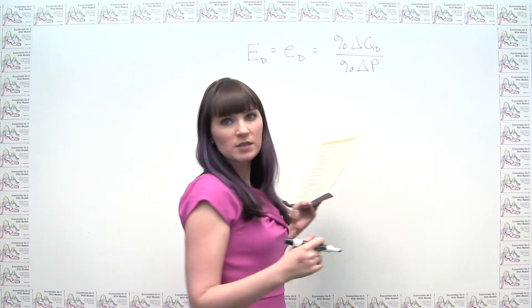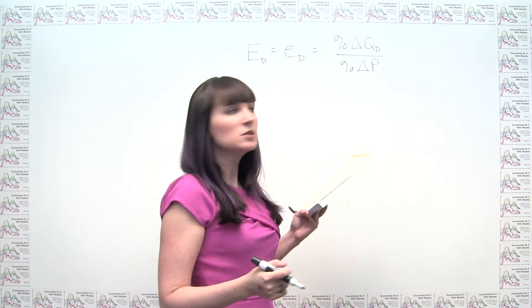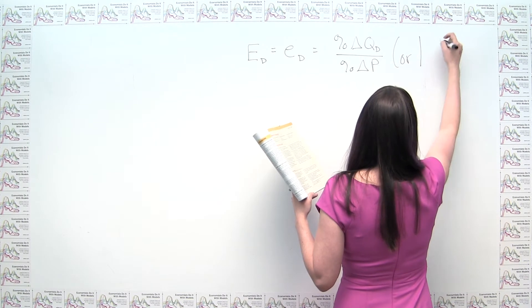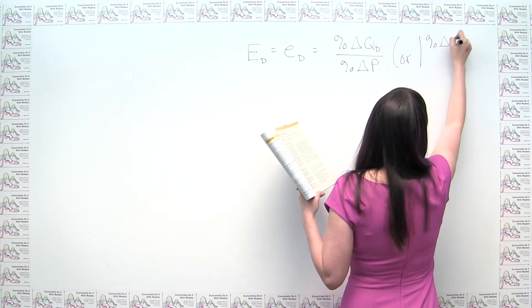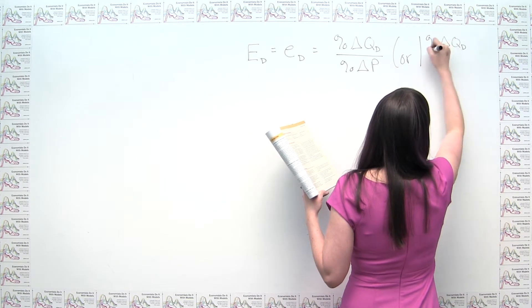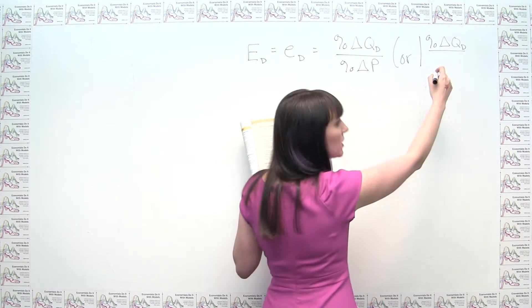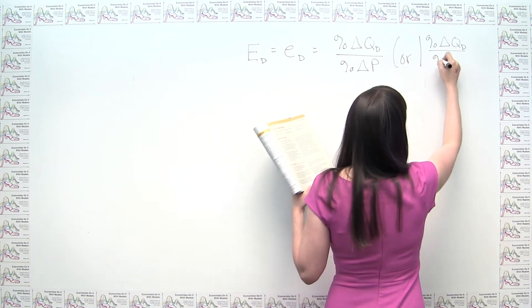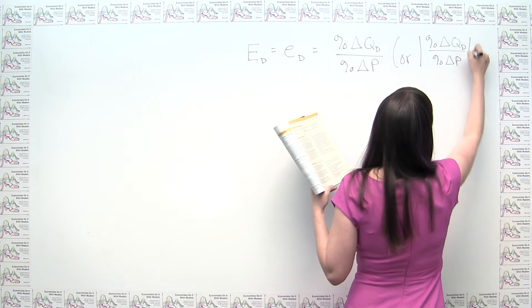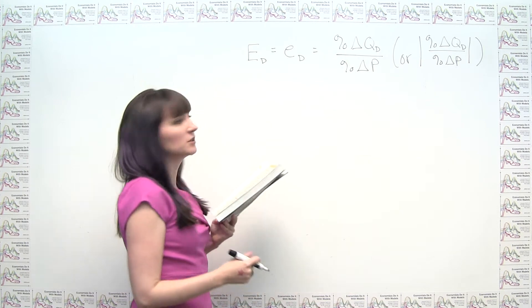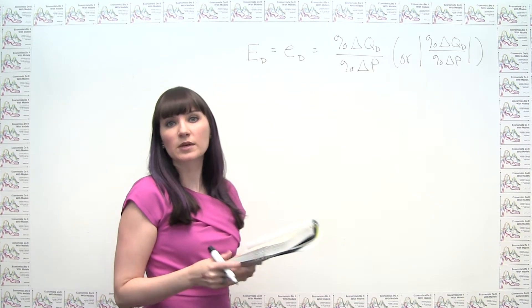But some other textbooks, and you want to make sure that you're doing what you're supposed to be doing, would say that they would just take the absolute value of these guys here. So we would say that price elasticity of demand is the absolute value of the percent change in quantity demanded divided by the percent change in price. And it's just a simple modification that we would just do at the end, so it doesn't make a huge difference.